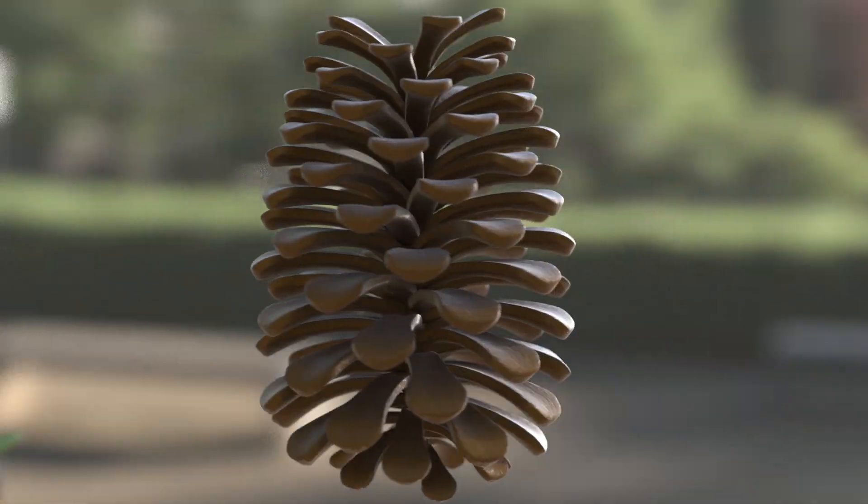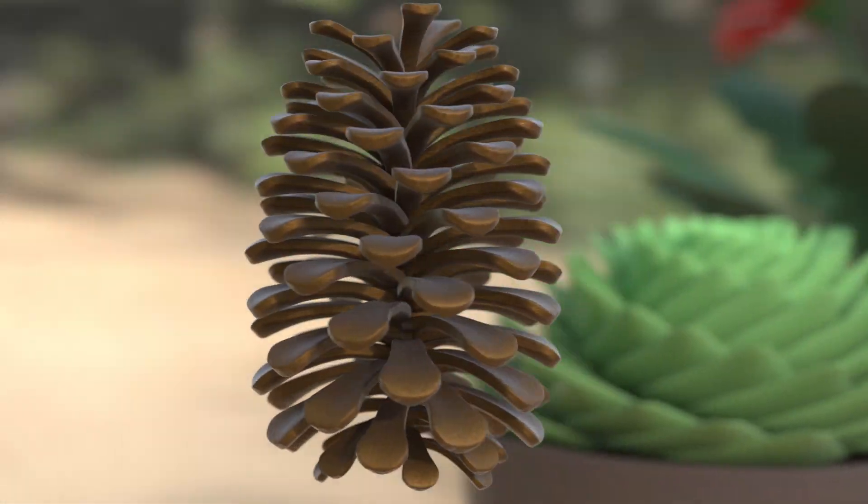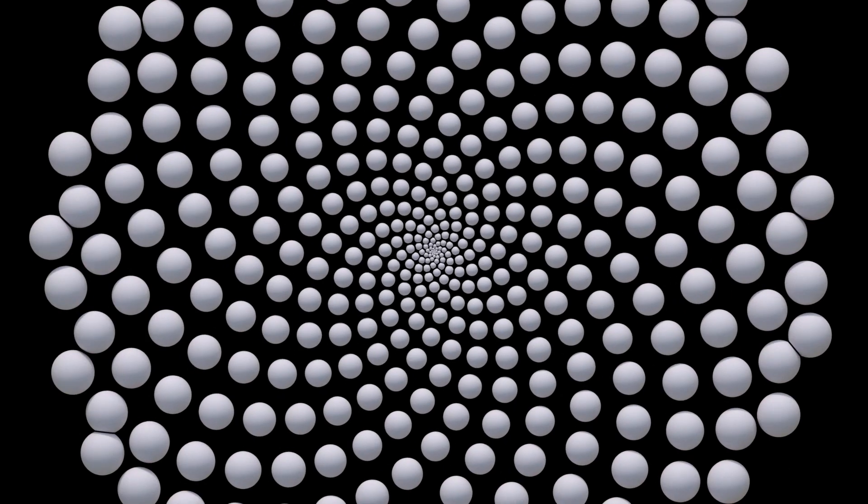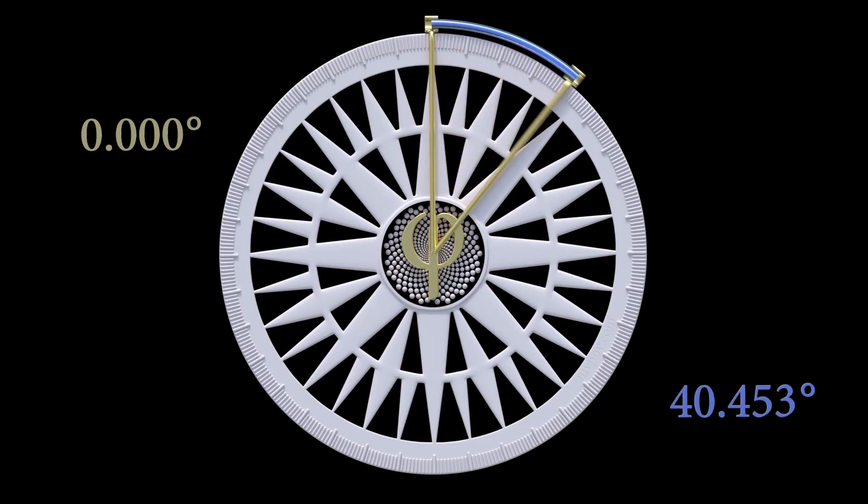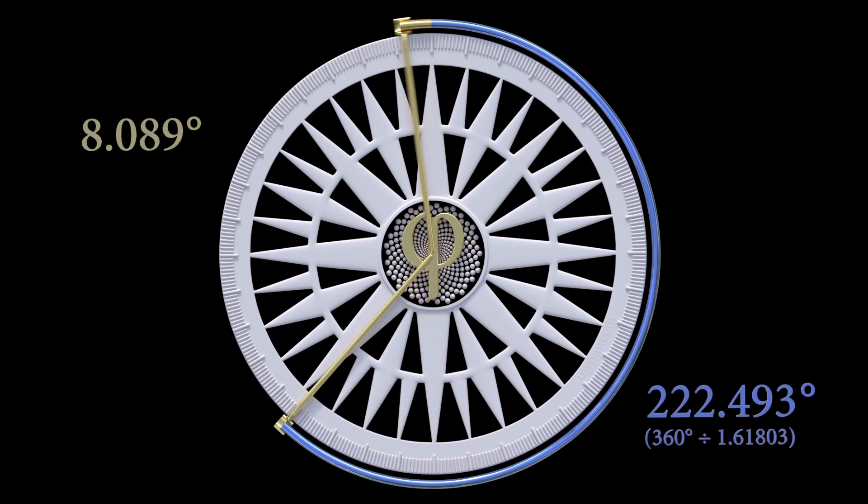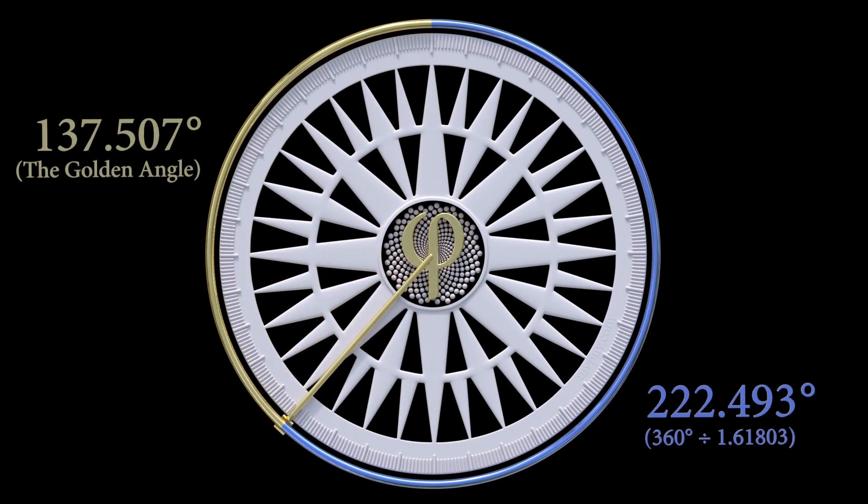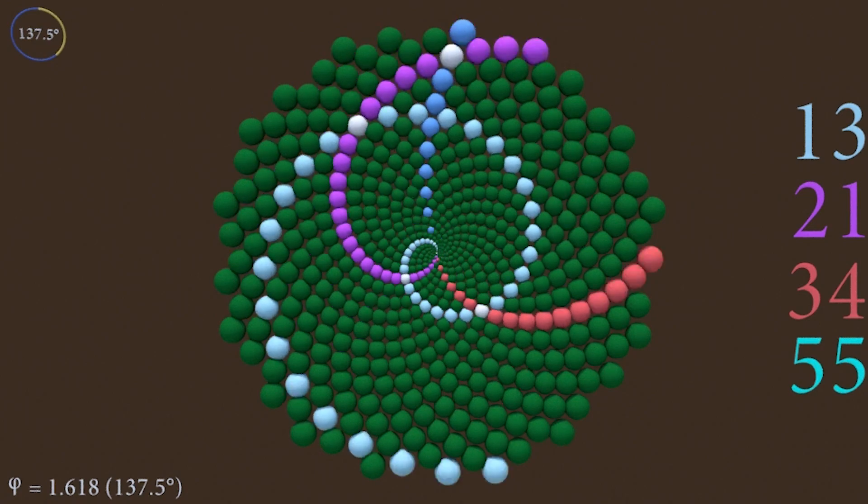You can create cones like the ones shown here using just a MoGraph cloner object, a couple of MoGraph step effectors, and an angle of 137.5 degrees, otherwise known as the golden angle. I will show you how to identify these patterns.